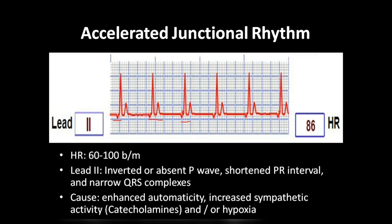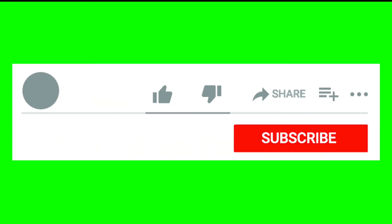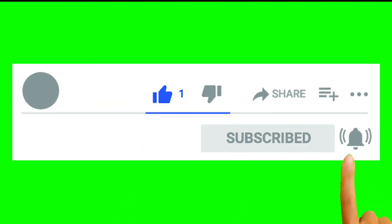The causes include enhanced automaticity, increased sympathetic activity, catecholamines, and hypoxia. Enhanced automaticity typically occurs because repeated influences passing through the junction cause this accelerated junctional rhythm. After one ventricular contraction, it overlaps with the next ventricular or atrial contraction, which is why we get an accelerated rhythm.